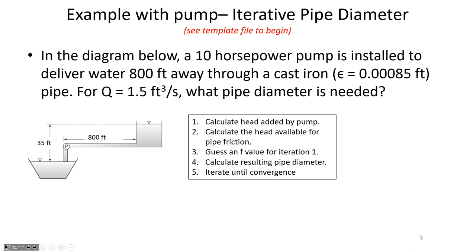Since this may be our first example in traditional units: the unit weight of water is 62.4 pounds of force per cubic foot, and the density of water is 1.94 slugs per cubic foot. One horsepower is 550 foot-pounds of force per second. The epsilon in this problem means the same thing as k_s — it's a measure of the roughness of a pipe. The unit weight is 62.4 lbf per cubic foot.